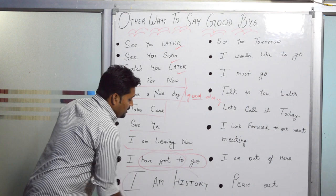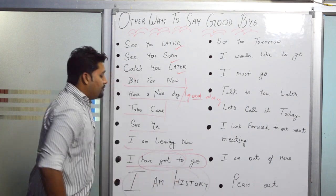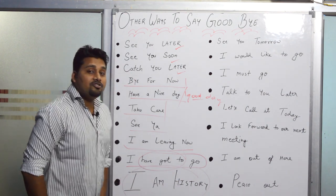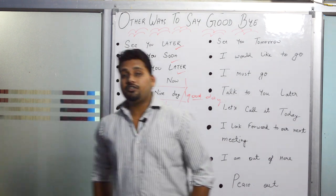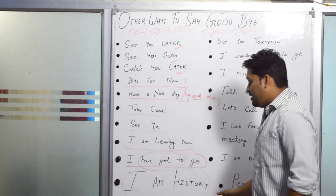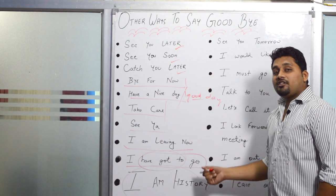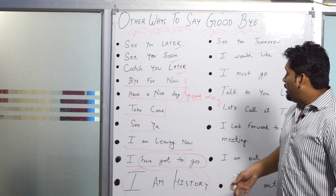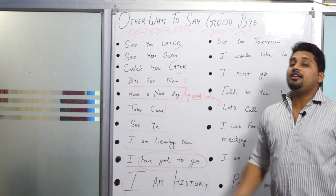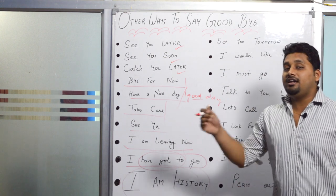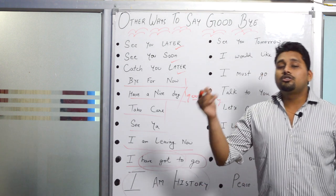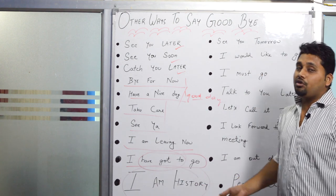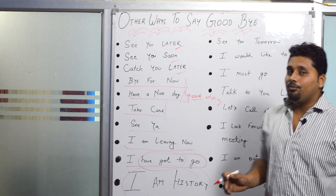Next is a kind of idiom — 'I'm history.' This means you are about to leave immediately, like you are saying goodbye and you are gone. It is used informally when parting from someone.